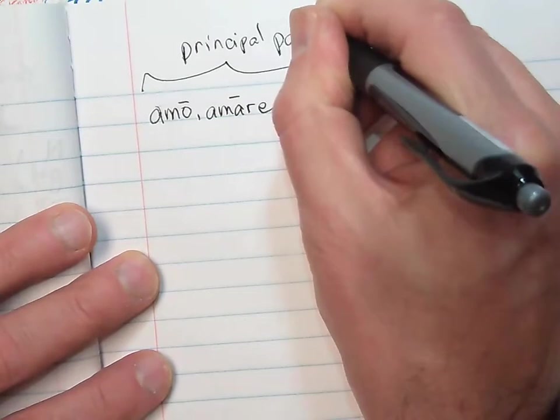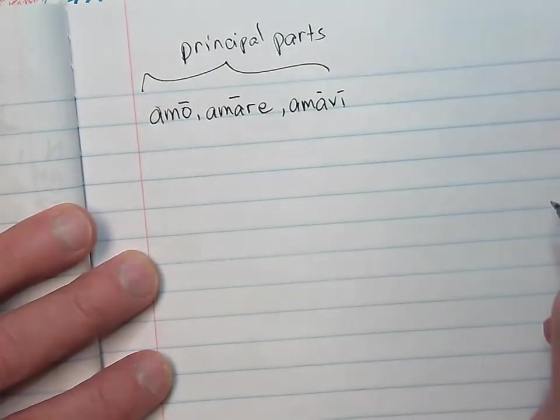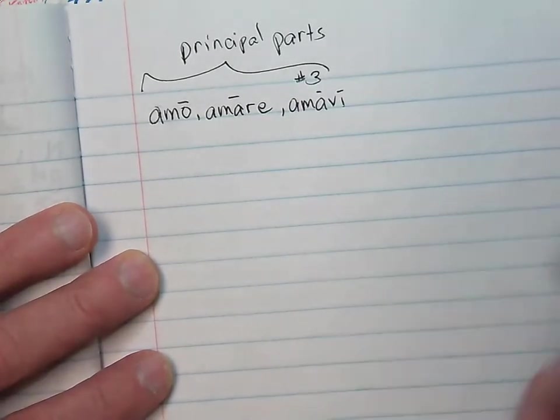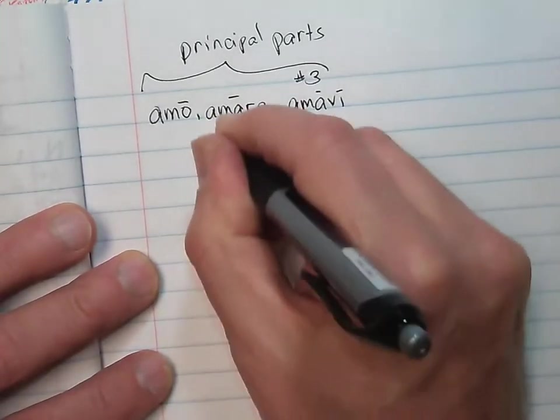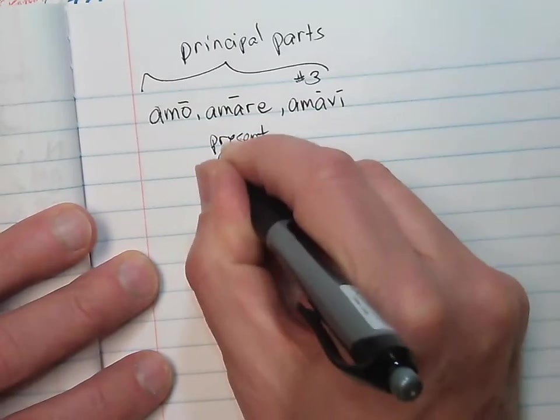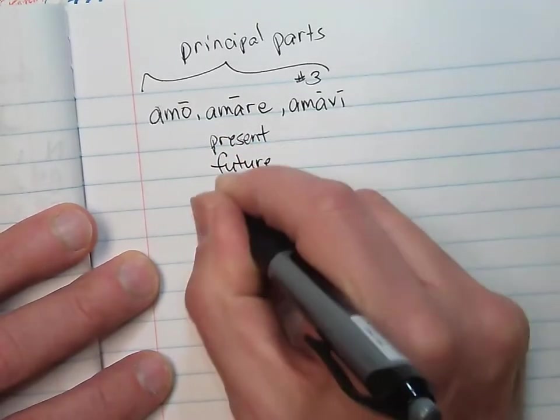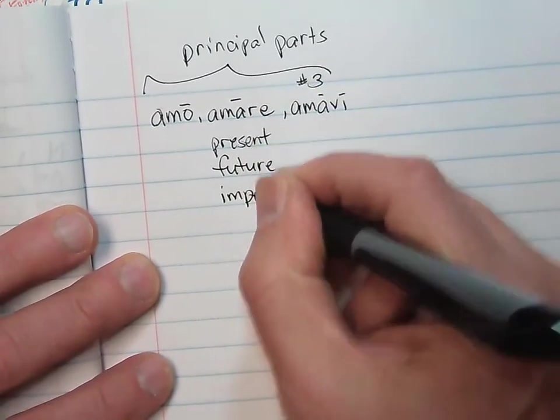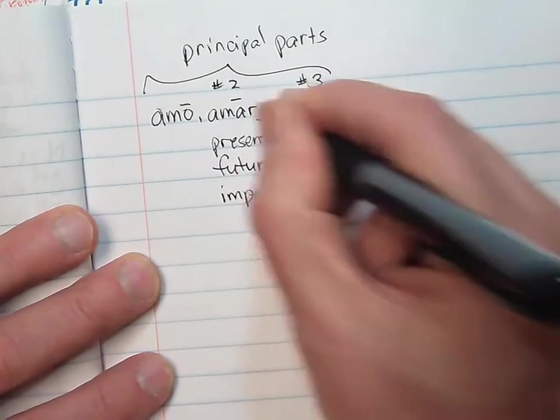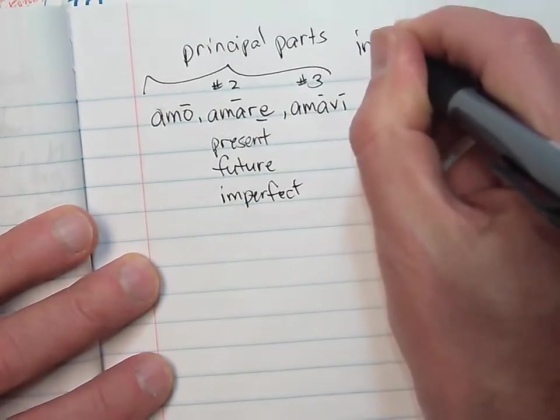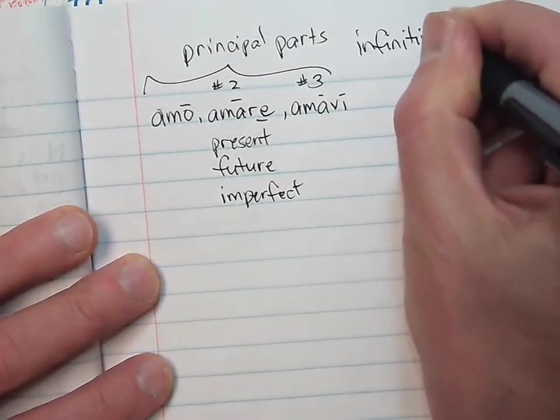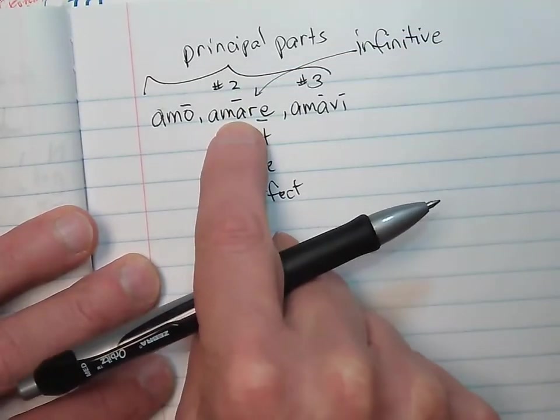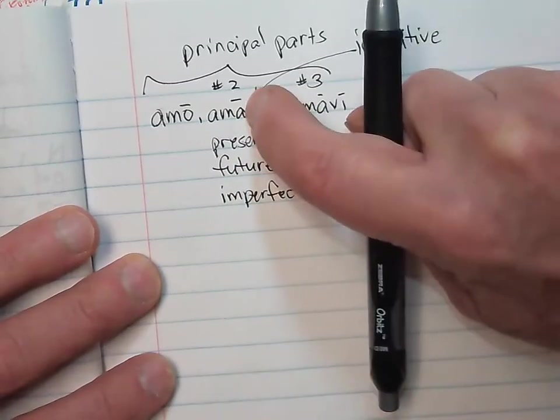The principal part we're going to be working with today is number 3. Now, you know three tenses so far: the present, the future, and the imperfect. And those three tenses I've written under the second principal part, which we call the infinitive. I have written these three tenses under the infinitive because it's the infinitive that is my starting point for these three tenses. I cut off the re.